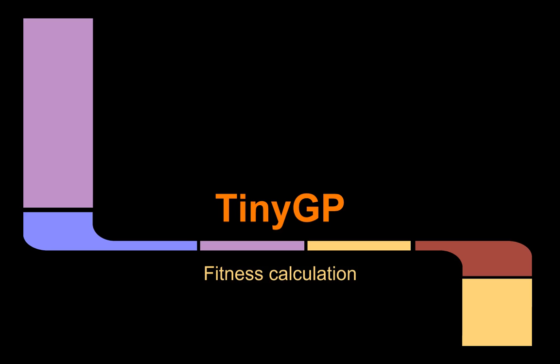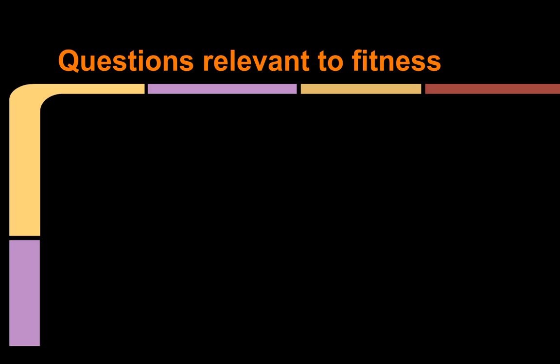Hello once again Internets. Today's Magical Electrical Lantern Box Show is about how TinyGP calculates fitness. There are three questions relevant to fitness we'll want to answer.